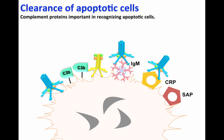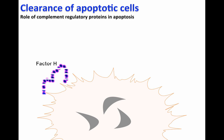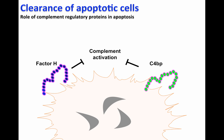Many investigators describe apoptosis as an efficient and non-inflammatory process. As you can see here, most of these proteins contribute to inflammation. Apparently, other proteins bind to apoptotic cells to balance the inflammatory processes. Examples of these proteins are factor H and C4 binding protein, also called complement regulatory proteins. What is important here is that factor H and C4 binding protein are able to control exacerbated complement activation, so the process of removal of apoptotic cells does not cause inflammation to an extent of damaging surrounding cells and therefore damaging the host.